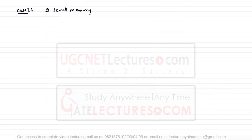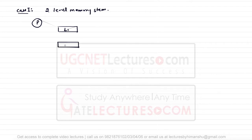Case 1: two-level memory system. Assuming the processor is at one end, this is Level 1 and this is Level 2. If the data is present in Level 1, we take the data from Level 1 and place it inside the CPU — that is called a hit.